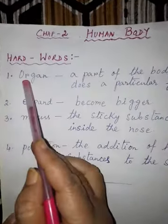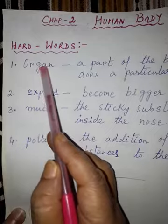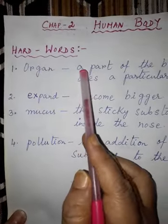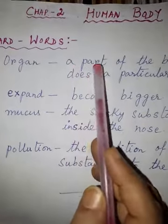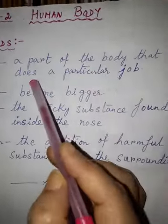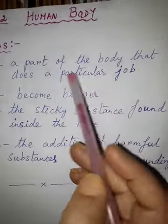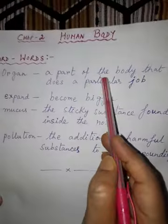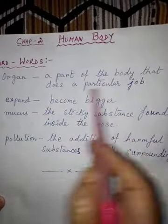Number one is organ — O-R-G-A-N. Organ means a part of the body that does a particular job. Again I repeat: a part of the body that does a particular job.